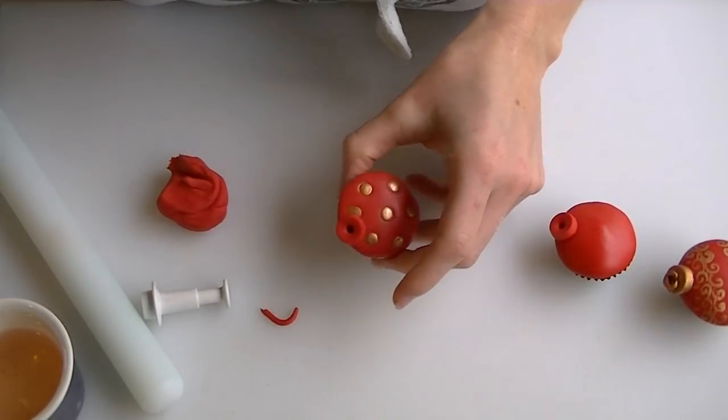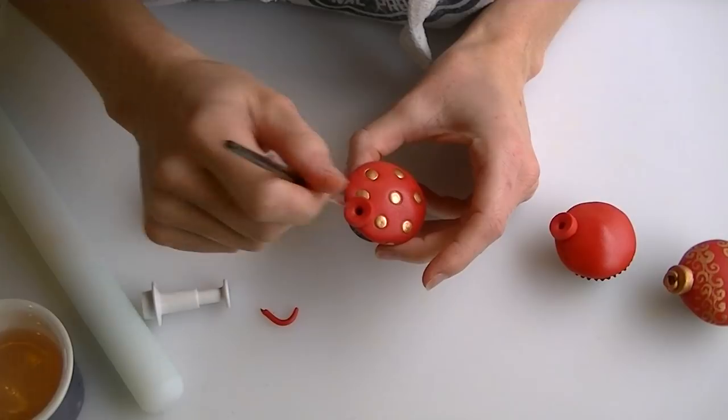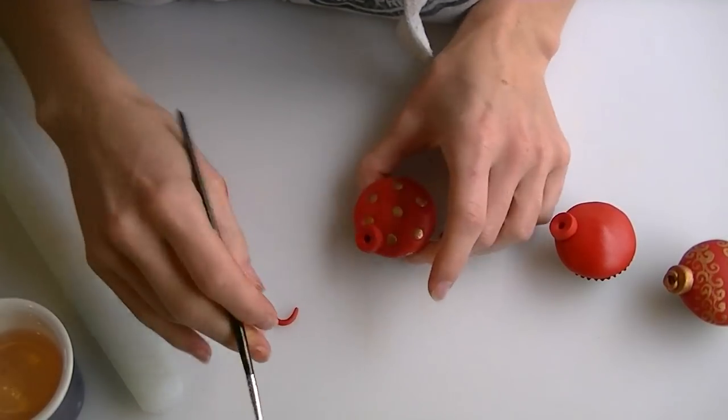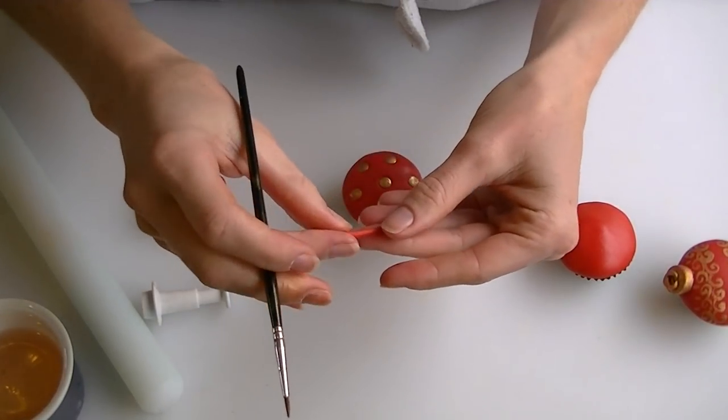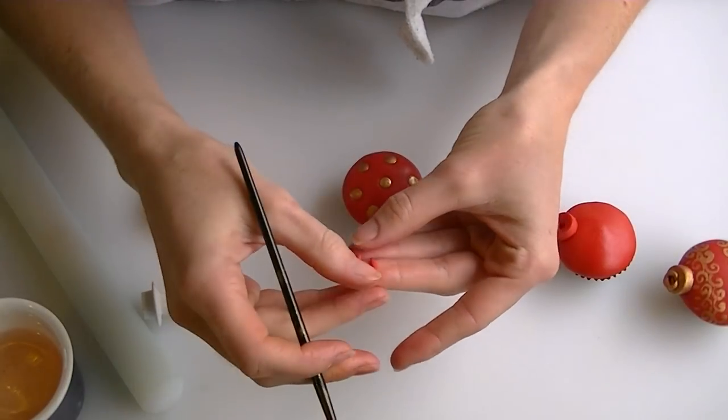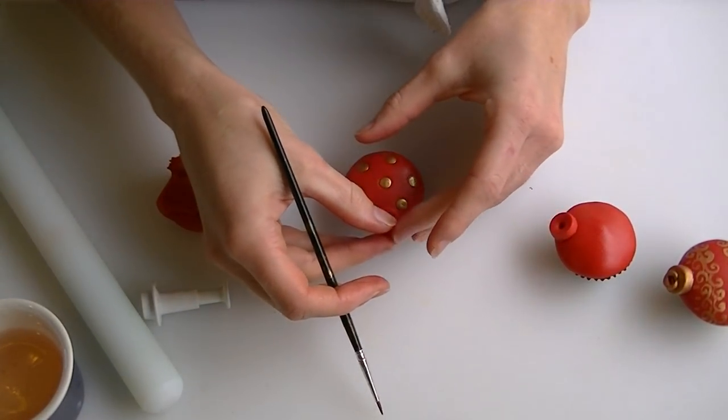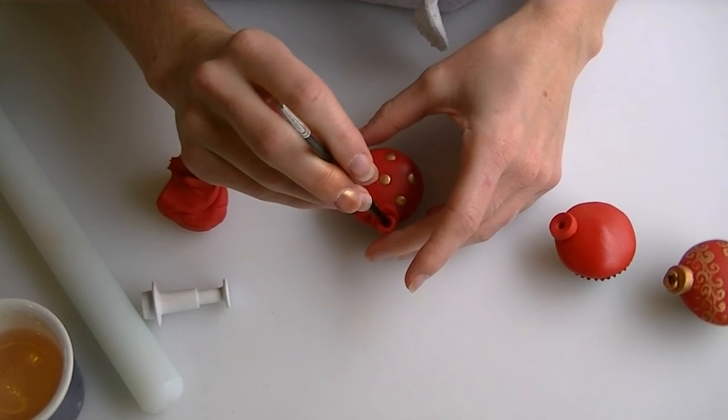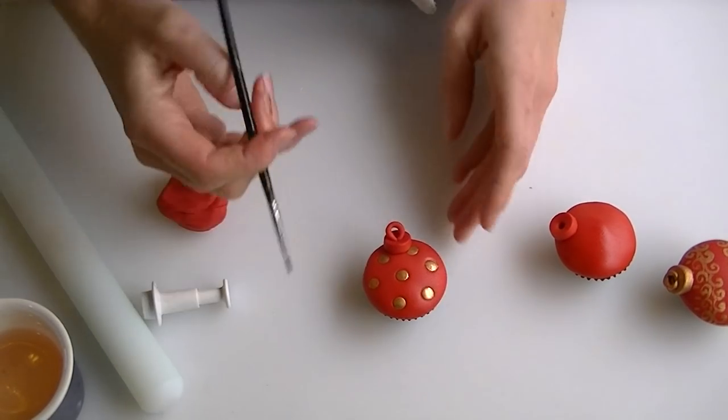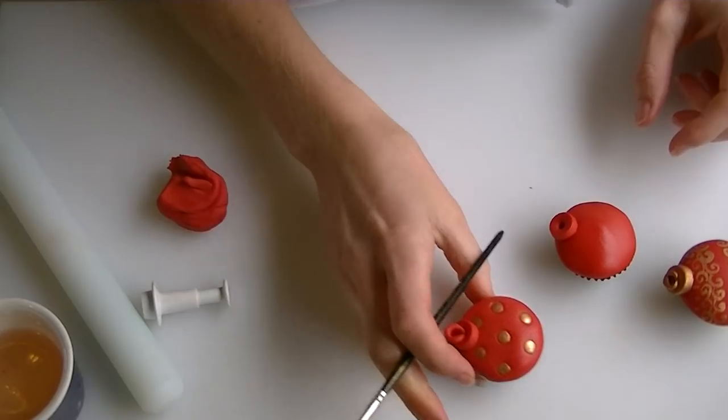And I'm just going to put a little bit of water just in that hole we've made there, try and bring it to a bit of a loop and just place that in the hole there like that. For the edge of our bauble, we'll do that again.